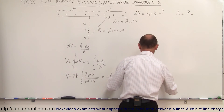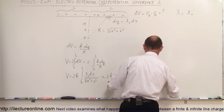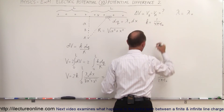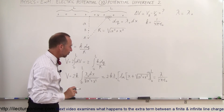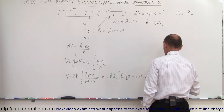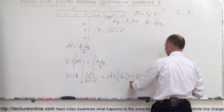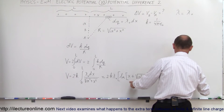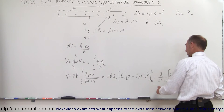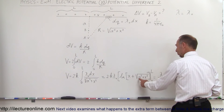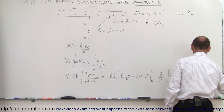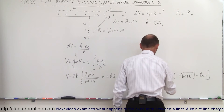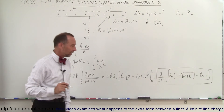Plugging in the limits, the result becomes lambda sub-naught over 2π epsilon sub-naught, times the natural log of (L + sqrt(A² + L²)) minus the natural log of A. That is the potential at point A.